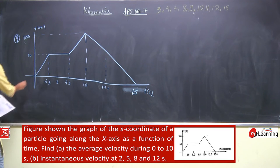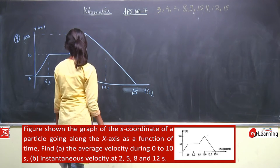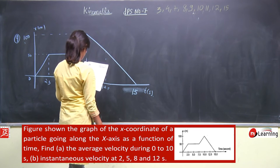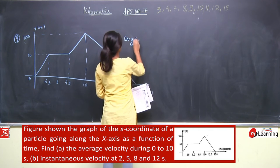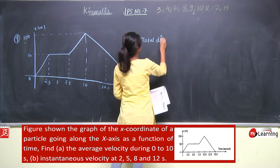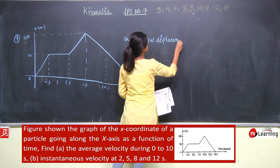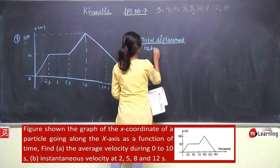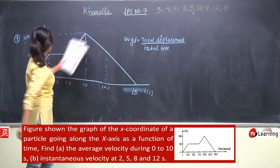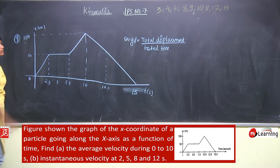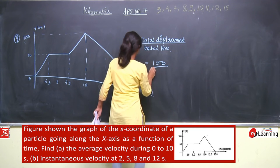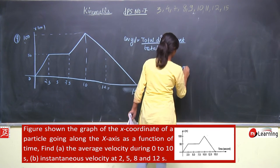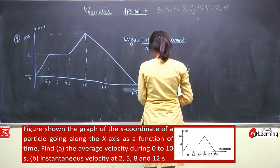0 से लेके 10 seconds तक average velocity क्या हो जाएगी? Average velocity = total displacement divided by total time. यहाँ से यहाँ तक total displacement 100 meter है, और total time 10 seconds लगा — that is 10 meter per second. तो average velocity हो जाएगी 10 meter per second.